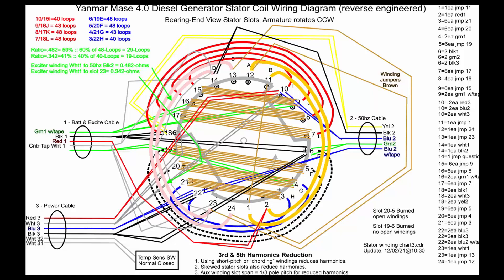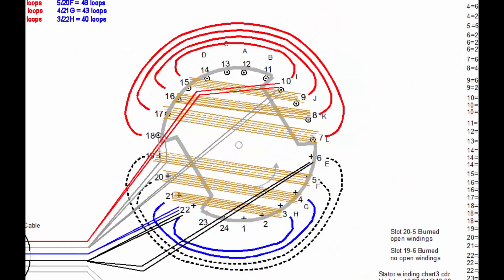There's four red windings at the top, and there's two blue windings at the bottom and two dotted black windings. The dotted black windings are the windings that were burned up when I received this alternator. They would normally be two blue windings also. So basically we have four windings on the top and four windings on the bottom for power generation.